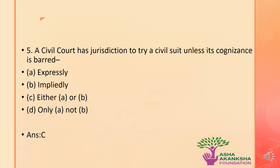The next question: a civil court has jurisdiction to try a civil suit unless its cognizance is barred — a) expressly, b) impliedly, c) either a or b, or d) only a, not b. The correct answer is option C — either a or b is correct, which means a civil court has jurisdiction to try a civil suit unless its cognizance is barred either expressly or impliedly.